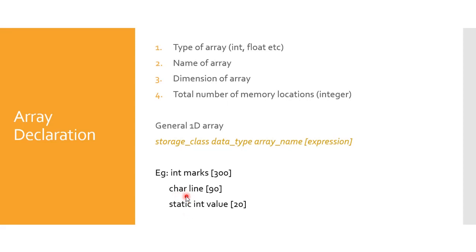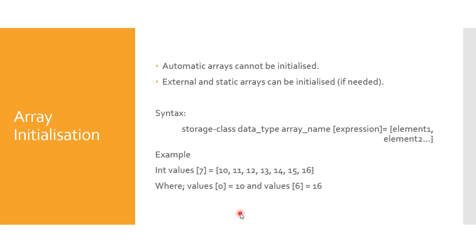For example, declaring char line[90] means the elements are characters, the array name is line, and there will be 90 straight storage locations in a row or column. Another example is static int value[20] — here static is the storage class, int is the data type, value is the array name, and there will be 20 elements in this array.